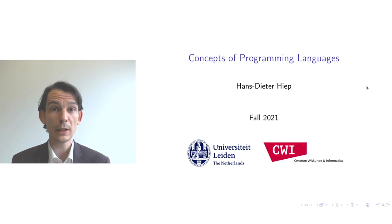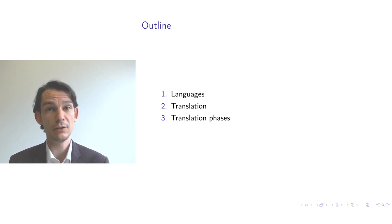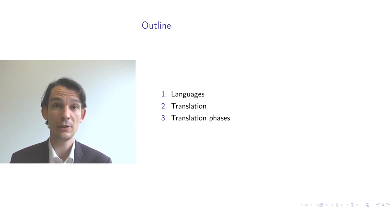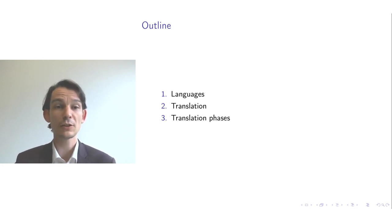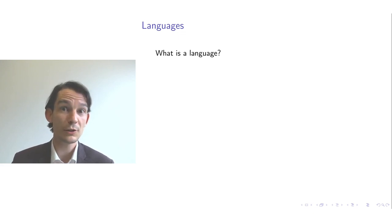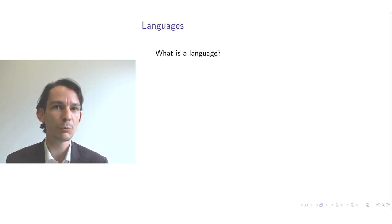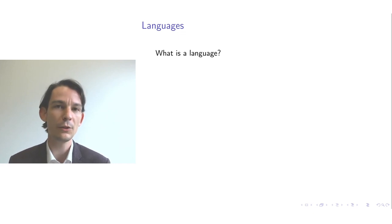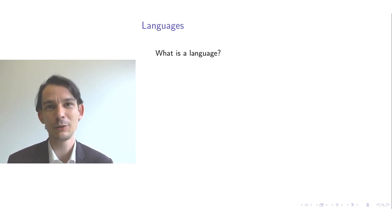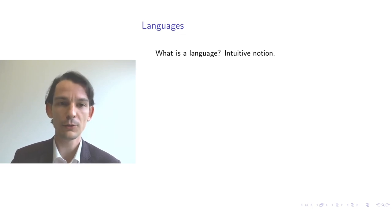Welcome to Concepts of Programming Languages. In this video I want to talk about languages, language translation, and translation phases as they occur in practice. Let's get started with languages. What is a language? You know English, you know maybe Dutch. These are spoken languages, and whenever you program computers — currently at least — spoken languages are not accepted yet. So we need a different way of communicating our intent to the computer. For that, we introduce the notion of a formal language.